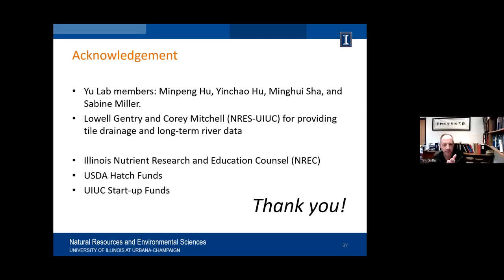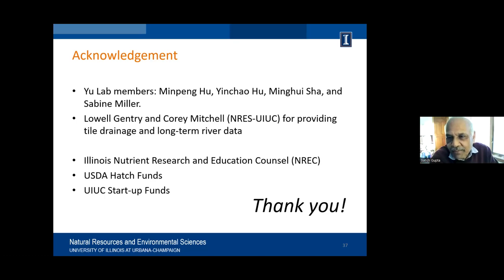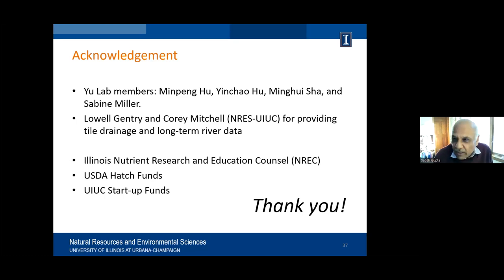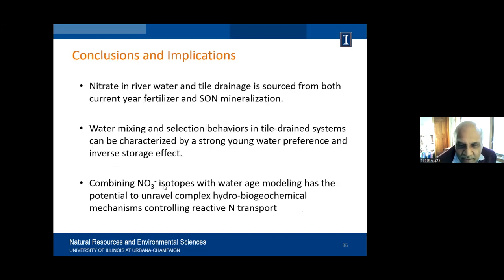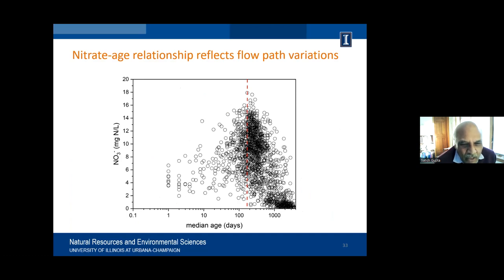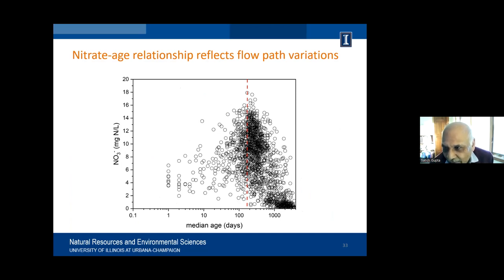Thanks so much, Zhangji. I'll open it up to questions. Satish has a question. Very nice presentation, I really enjoyed it — some of your work matches with some of the stuff we have done. Going back to your slide on concentration versus age — are you basically saying, going back to Van Meter's paper, that almost all the nitrogen going into the river goes out in 365 days rather than sitting there for 30 years?